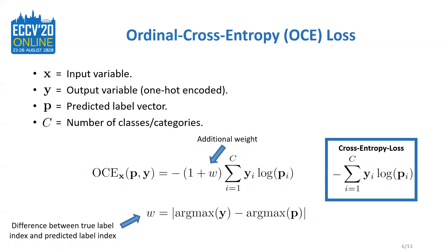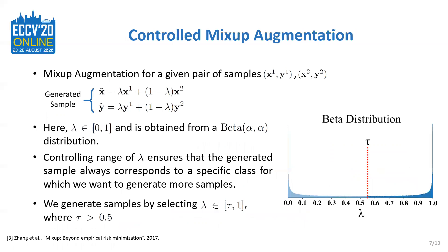Next, we will look at the controlled mix-up augmentation technique. Mix-up augmentation consists of generating additional data samples by linearly combining different training sample pairs. Both the input feature variable and the output variables are linearly combined to generate additional samples. By using different lambda values, one can create different samples from the same pair of training samples, with lambda being randomly sampled from a beta distribution. To have more control over this process, we can create additional samples for a specific category by controlling the range of lambda using a threshold parameter tau. Setting tau greater than 0.5 ensures that the generated sample will be dominated by the category for which we want to create more samples.